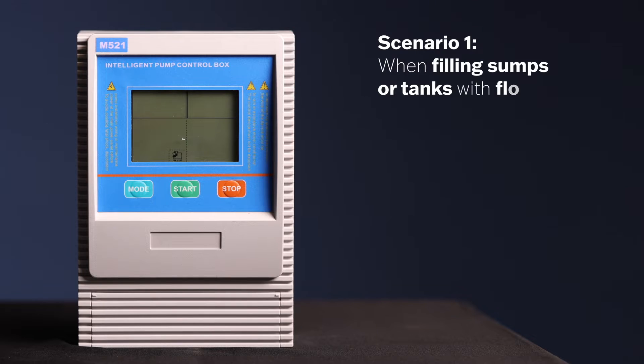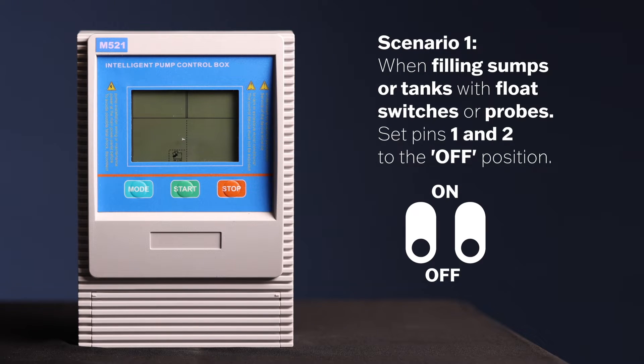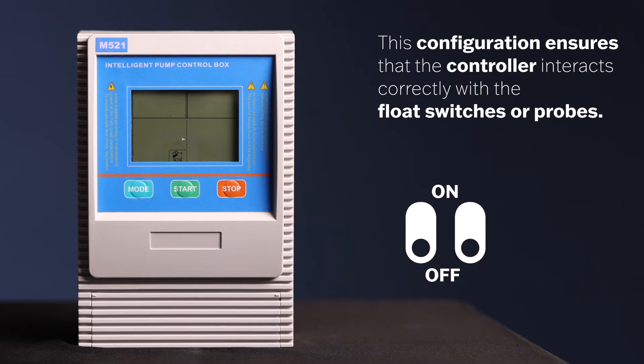Scenario 1: When filling sumps or tanks with float switches or probes, set pins 1 and 2 to the OFF position. This configuration ensures that the controller interacts correctly with the float switches or probes, allowing for effective control during the filling or emptying process.